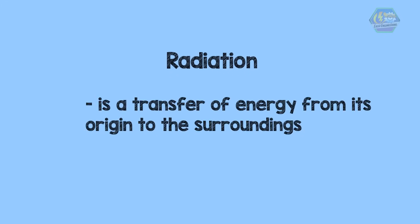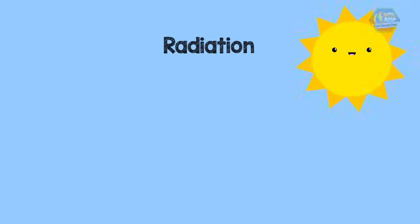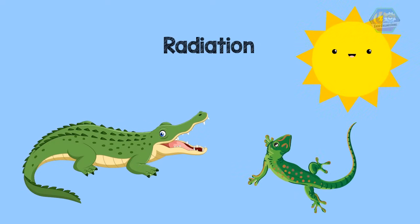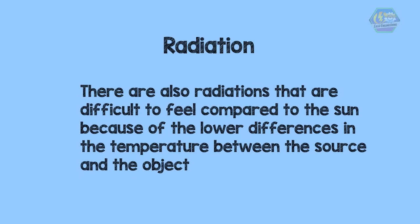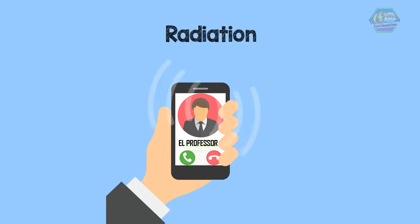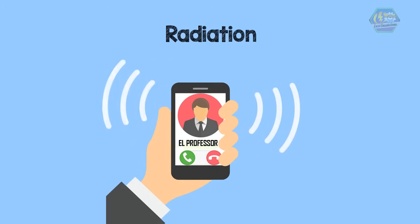The last form of heat transfer is radiation. Radiation is the transfer of energy from its origin to the surroundings. The most common example can be felt every day — it is sunlight. Alligators and lizards use the radiation from the Sun to warm their bodies. There are also radiations that are difficult to feel, such as the radiation produced by our mobile phones — we cannot see it nor feel it, but the radiation is very dangerous to our body.